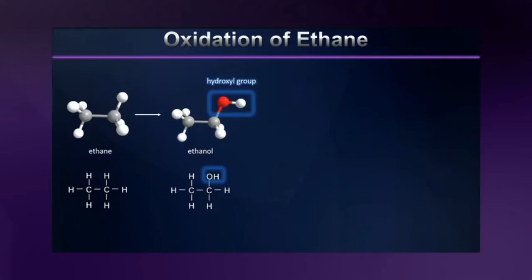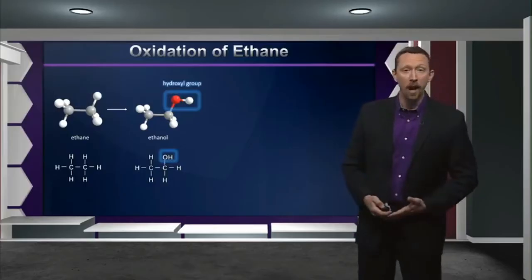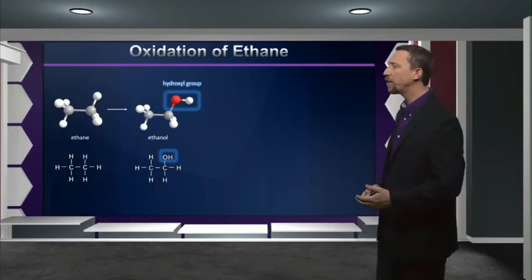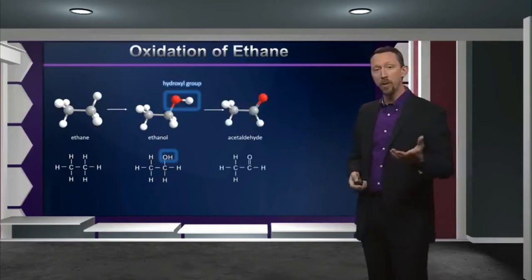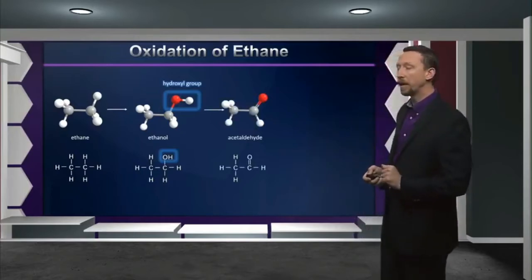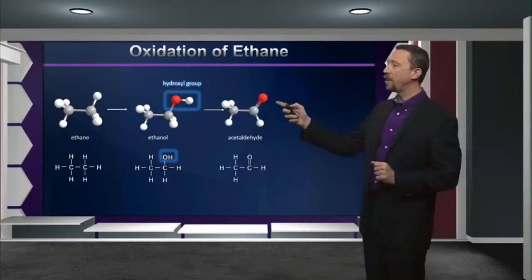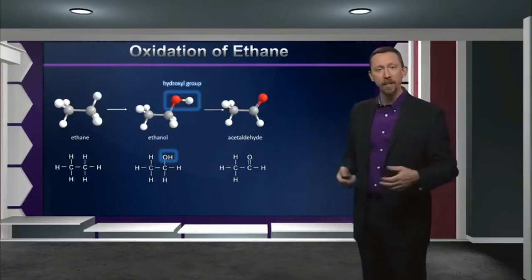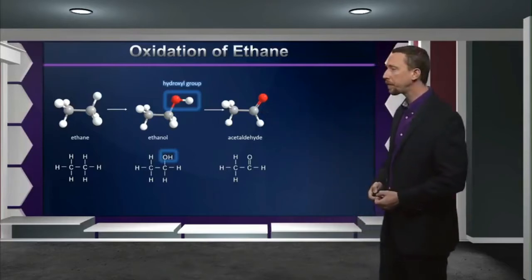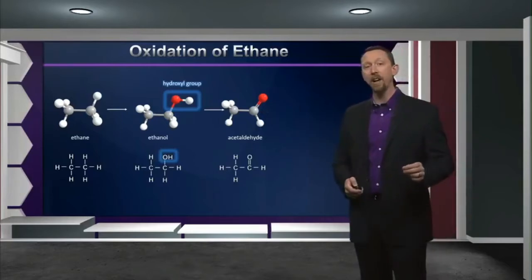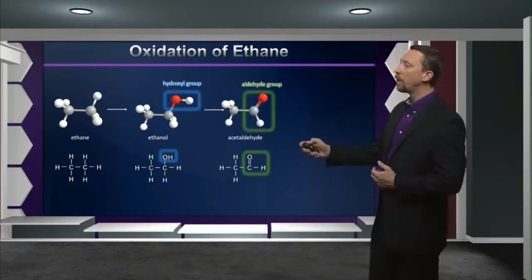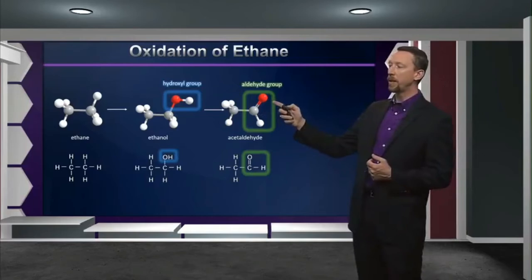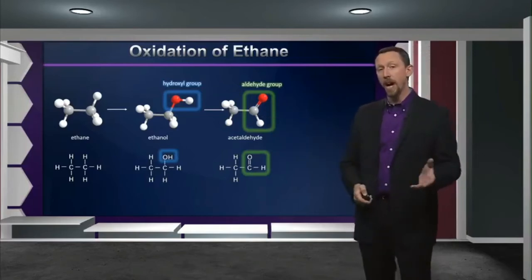But we're not done there. We can add additional oxygens or additional bonds to oxygen in several ways. The first of which is we simply create a double bond to the oxygen. We have to remove two atoms of hydrogen from our molecule to do this. But we've added a new connection to the oxygen, so we would say that this is more oxidized. This molecule is known as acetaldehyde, and it contains what we call an aldehyde group, which is a carbon double bonded to an oxygen and also singly bonded to a hydrogen.